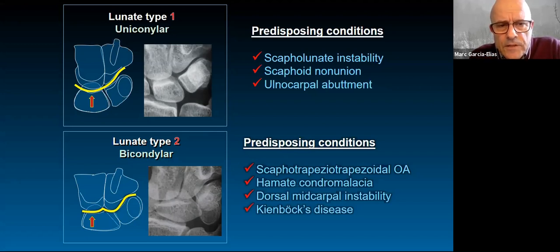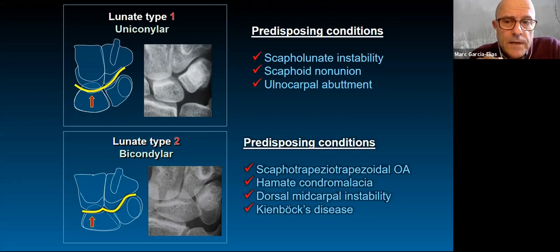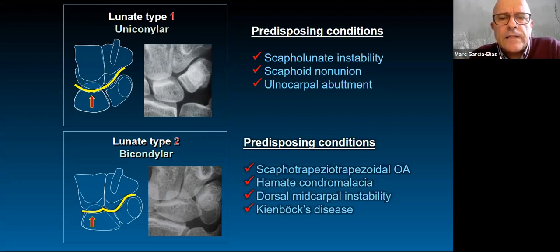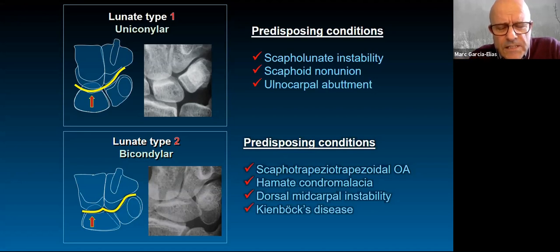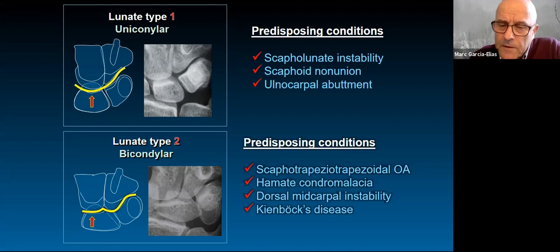On the other hand, we have the bicondylar type, where the lunate has two distal articular surfaces — one for the capitate, another for the hamate. This is more stable, but has predisposing conditions for scaphoid STT arthritis and avascular necrosis of the proximal pole. Lunocarpal instabilities are also more frequent, and the ulna tends to be shorter, which is why this shape of the mid-carpal joint is associated with Kienböck's disease.